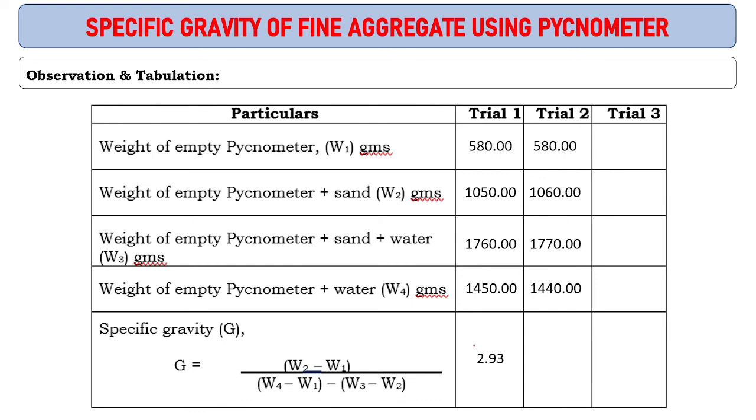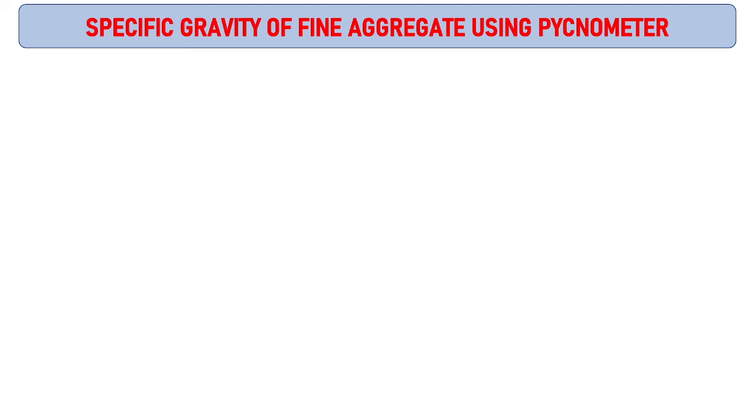Doing the second trial with these readings, the specific gravity is 2.82. Third trial gives specific gravity of 2.86. So we have three trial specific gravities: 2.93, 2.82, and 2.86.